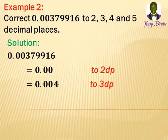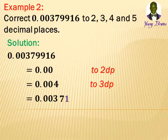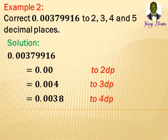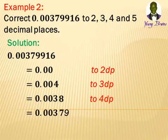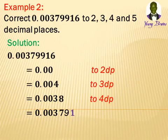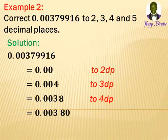To 4 decimal places: we have 0.0037, but the fifth digit is 9, which we approximate to 1 and add to 7, giving 8. So the answer is 0.0038 to 4 decimal places. To 5 decimal places: we have 0.00379, but the sixth digit is 9, which we approximate to 1 and add to the last digit, giving us 0.00380 to 5 decimal places.